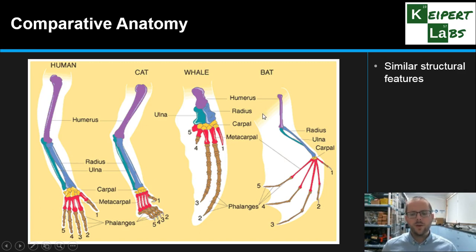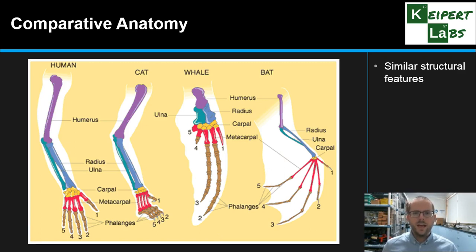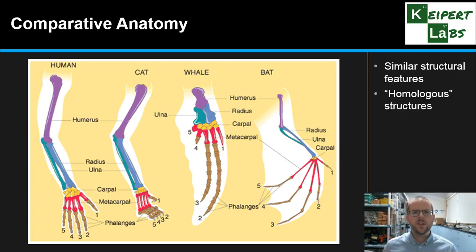Your radius and ulna have their equivalents as well. Even though we have very different species — and we're talking all mammals in this particular case — we're seeing that very different species have a lot of similar structures. We call these homologous structures, sharing the same function or similar form.